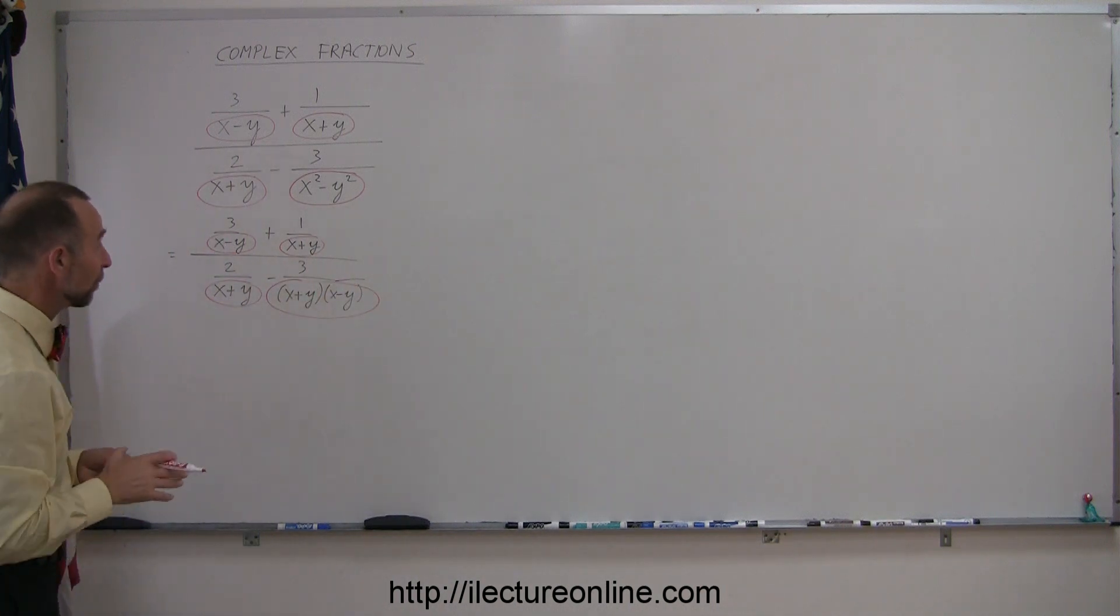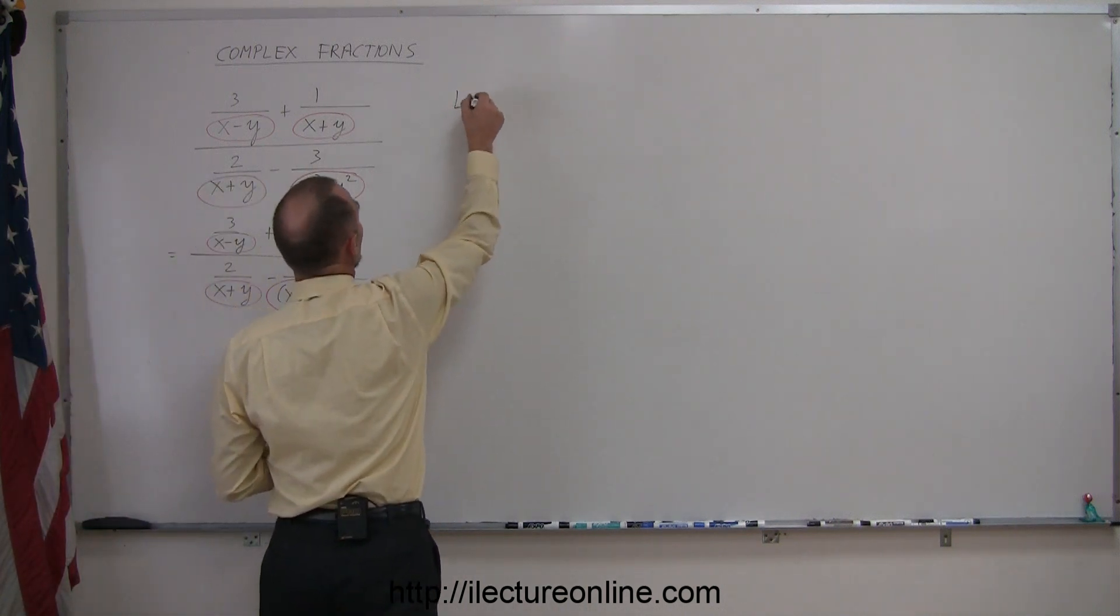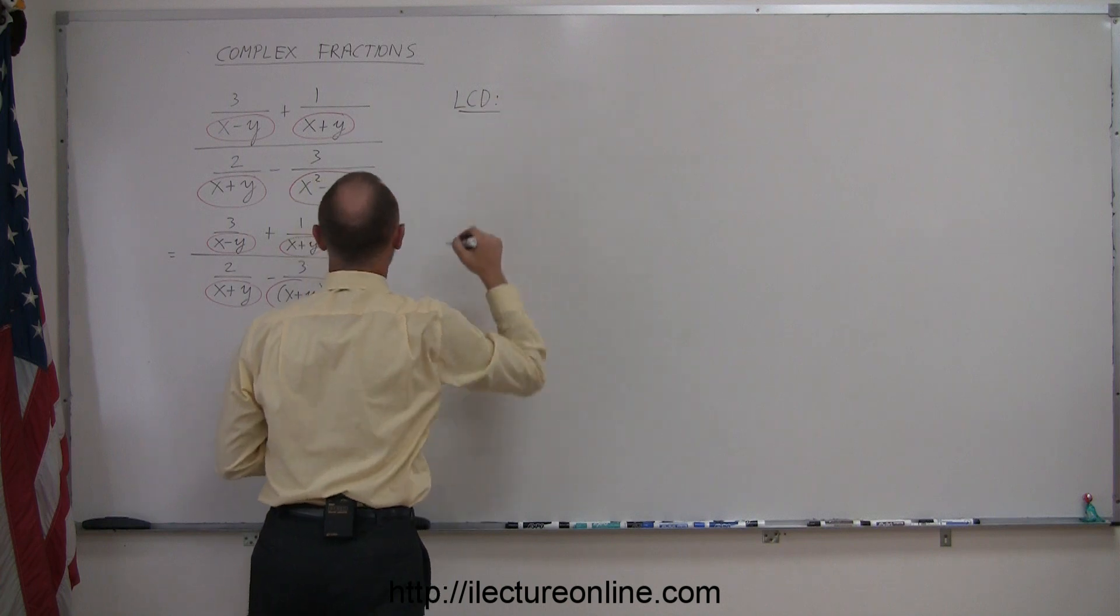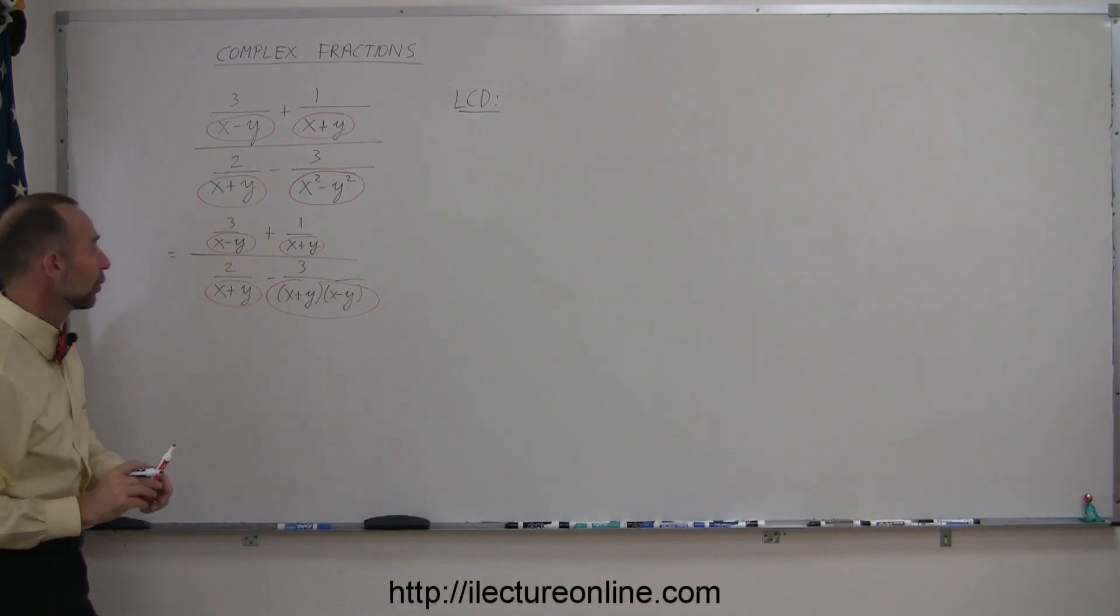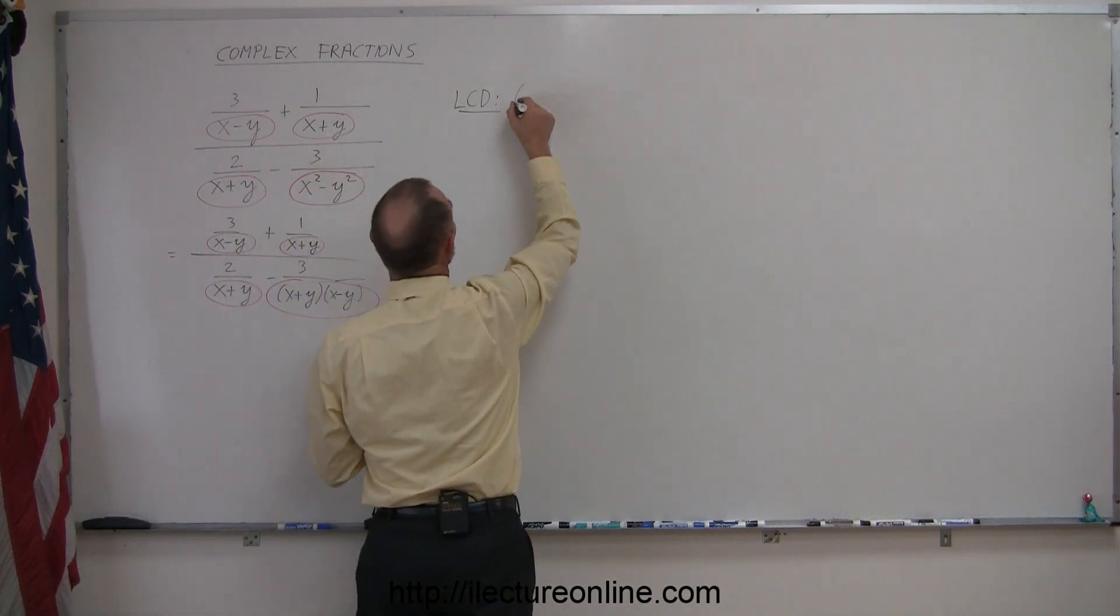So, to solve these problems, the way I like to solve them, I want to find the lowest common denominator, and I think it's pretty clear that in this case the lowest common denominator of all these fractions is simply the product of the two, which is x plus y, times x minus y.